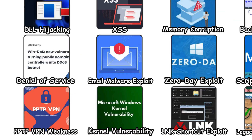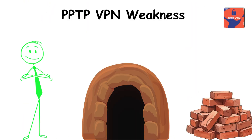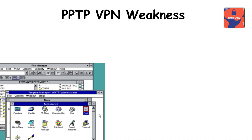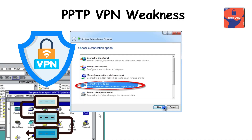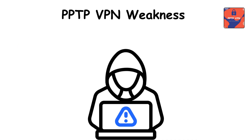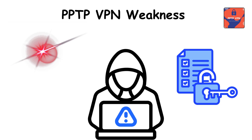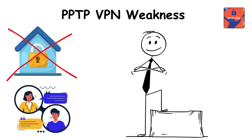PPTP VPN weakness. Picture a secret tunnel with loose bricks that anyone can move aside. Old Windows VPN protocols, such as PPTP, used weak encryption. Attackers could intercept or decrypt communications. A private conversation was not truly private.